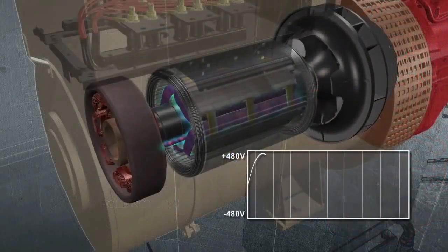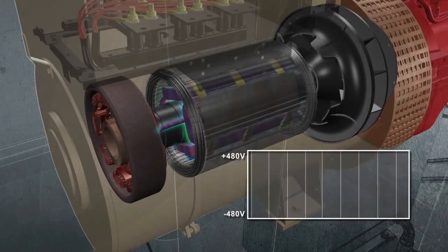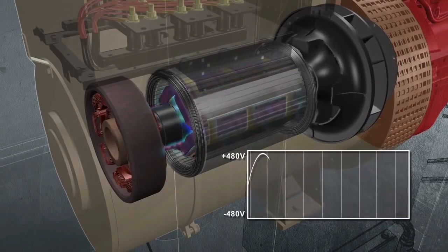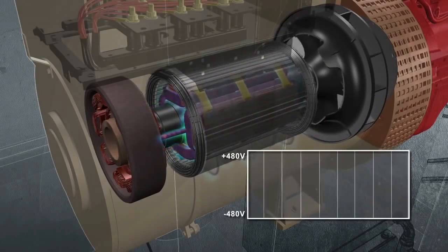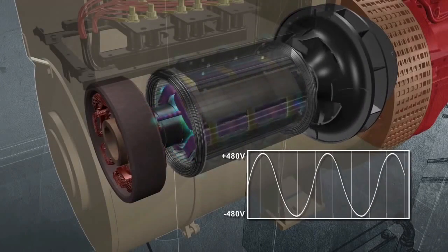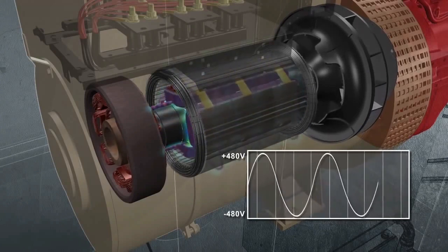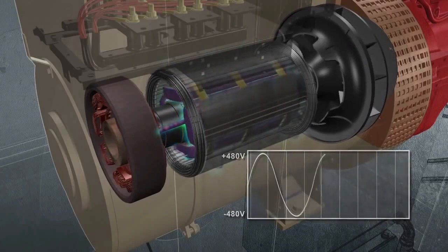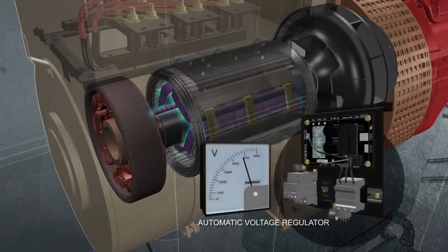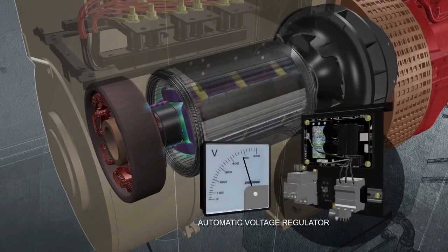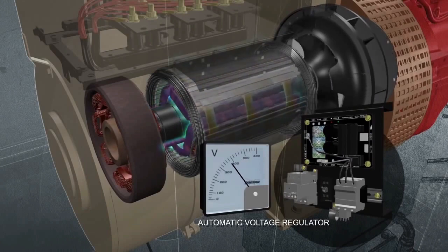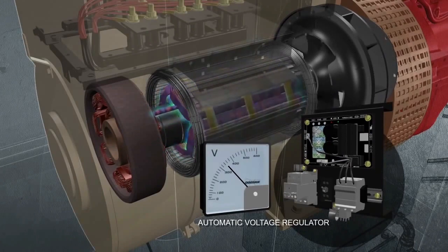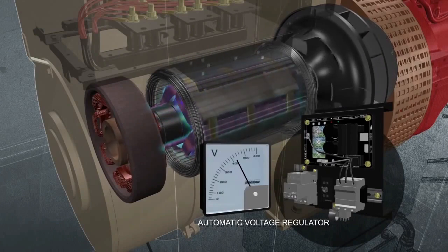Because the magnetic field builds and subsides, voltage fluctuates between positive and negative peaks, which is known as alternating current. The stronger the field, the higher the peaks. Ideally, voltage levels should be consistent so that constant power is provided when under load. To do so, an automatic voltage regulator, or AVR, adjusts the magnetic fields as needed. During heavy power demands, voltage decreases, causing the AVR to increase the magnetic field. Conversely, when power demands are low, the AVR tempers the field.